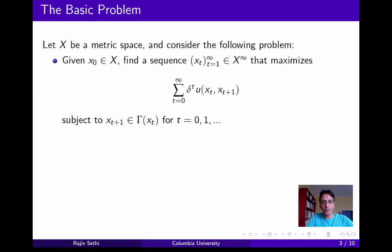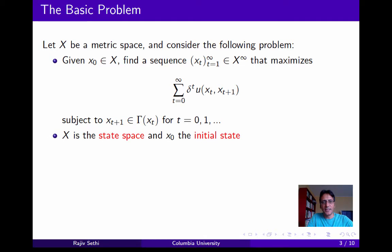Let x be a metric space and x0 a point in x, which we'll interpret as the initial state. The objective is to find a sequence of states xt, all of which belong to x, such that this sequence maximizes the sum of discounted payoffs, subject to the constraint that xt+1 must lie in the image under gamma of xt, where gamma is a self-correspondence on x. x is referred to as the state space, x0 as the initial state, and gamma as the transition correspondence.